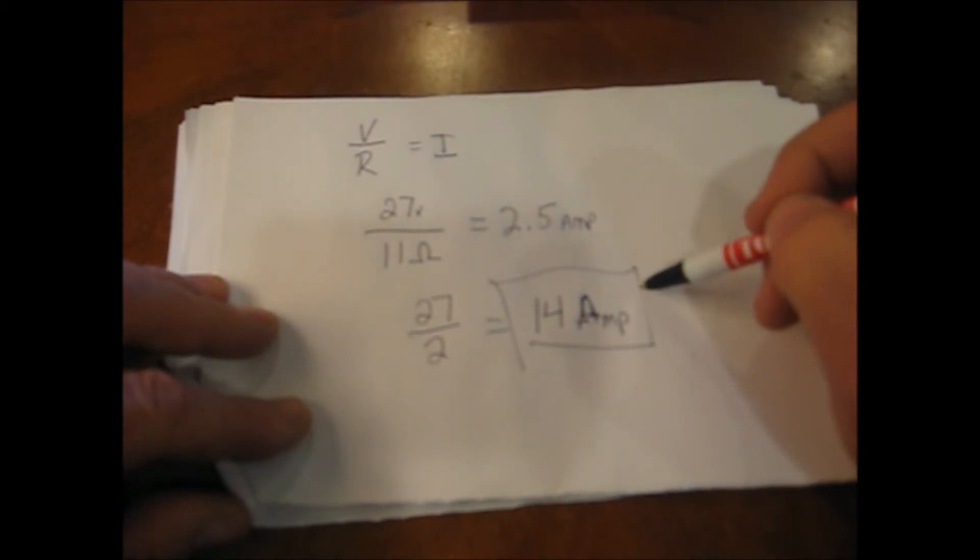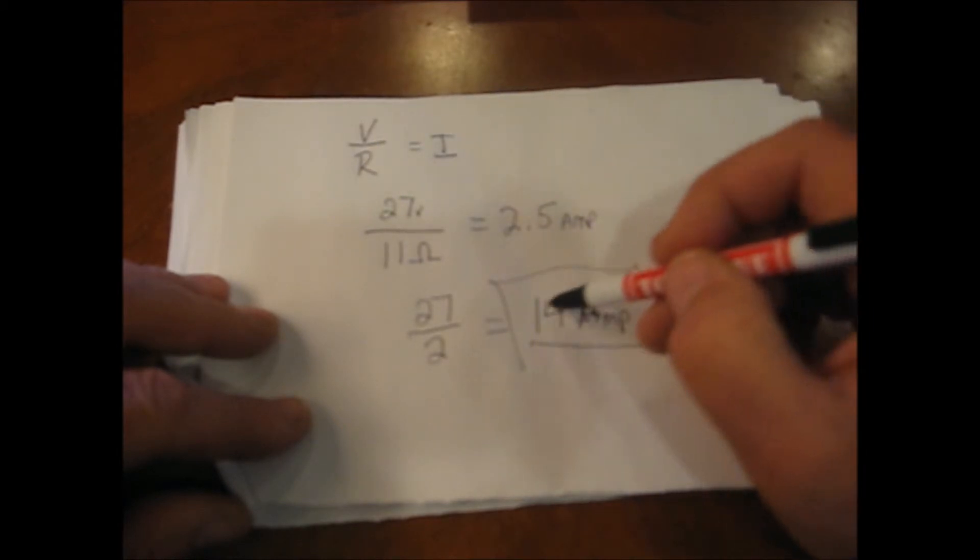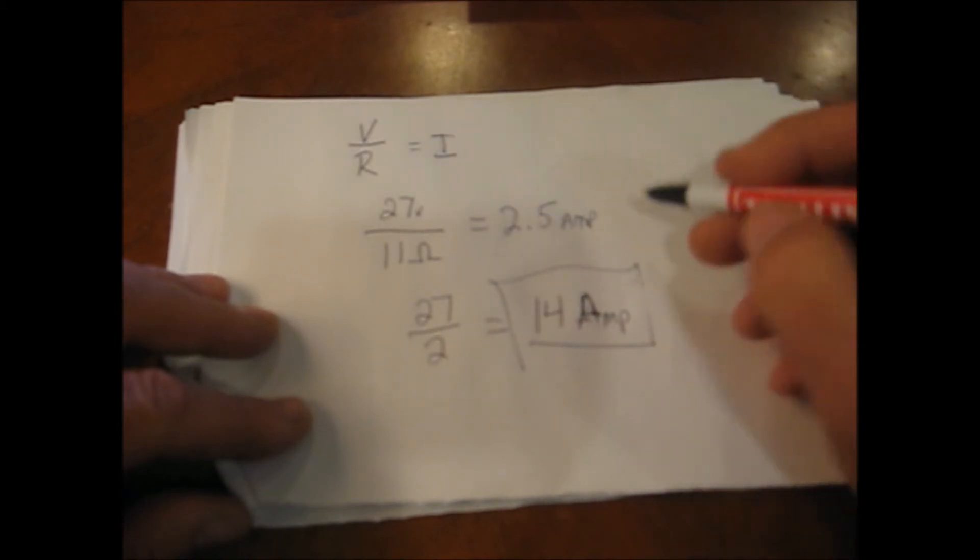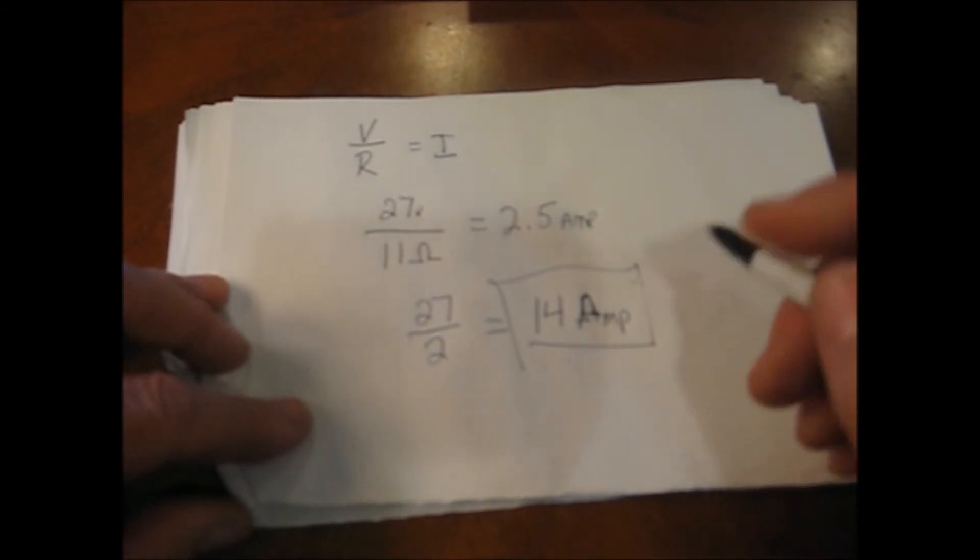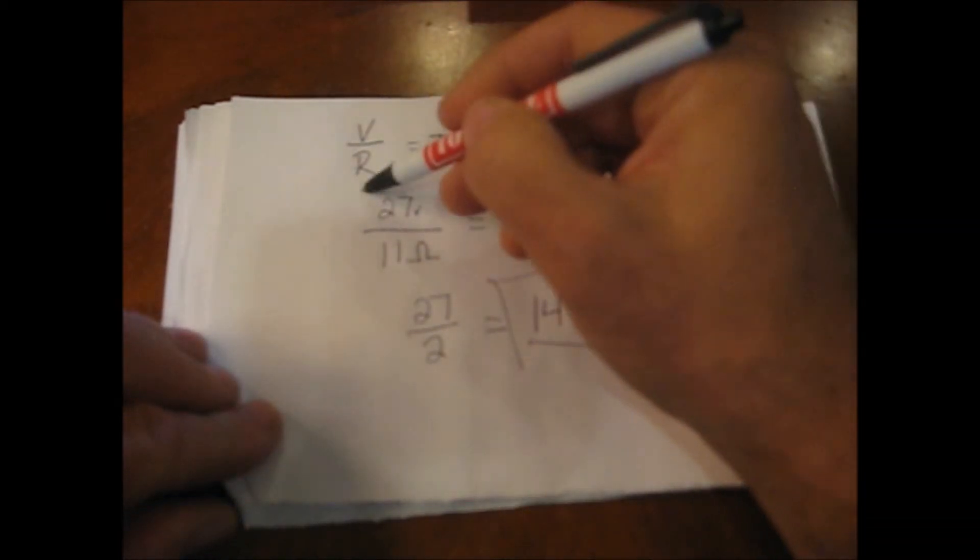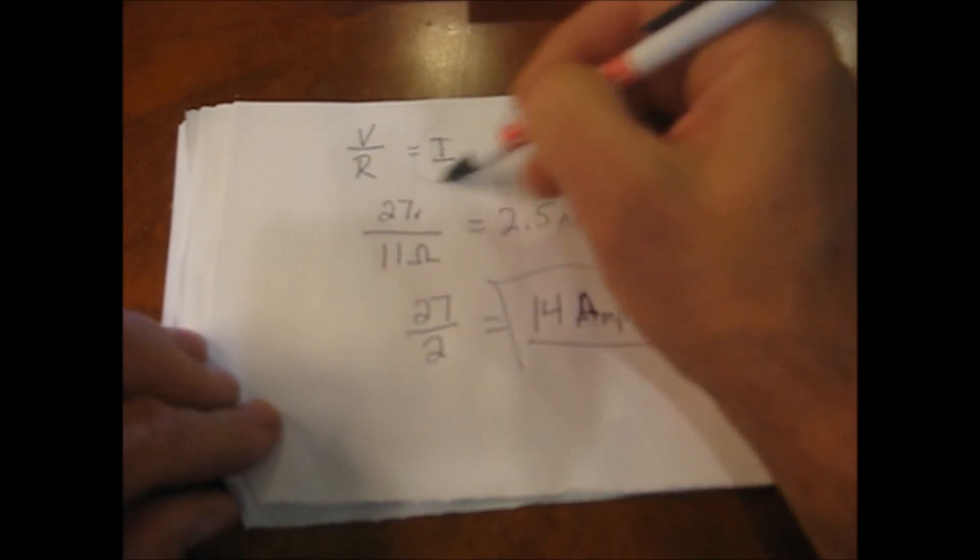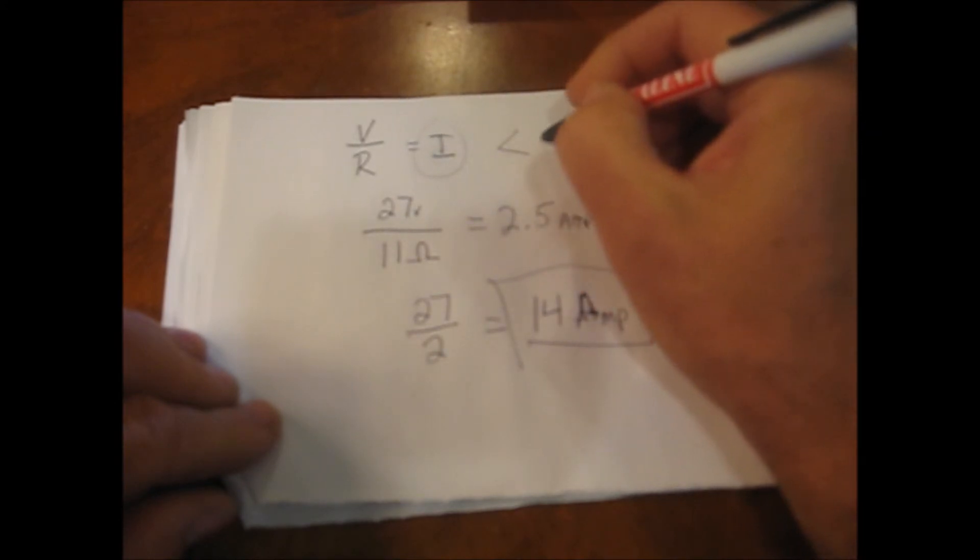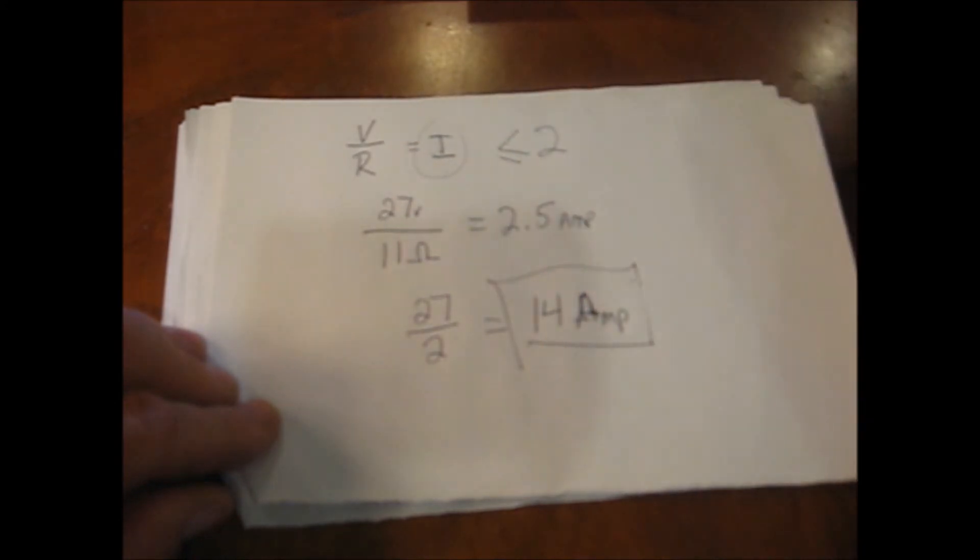This is a bad contactor. And this is what you will see when your thermostat is blank, because we've blown the fuse. V over R equals I. And we want I to be somewhere a lot less than 2.